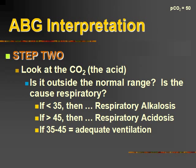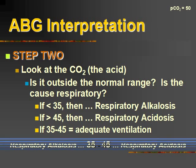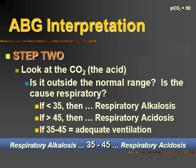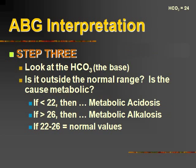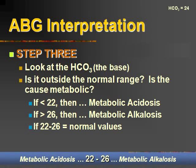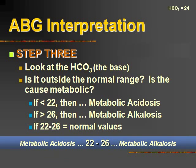Step two, we're going to look at the CO2, the acid. In this case it's 50 — is it outside the normal range? It fits the respiratory acidosis criteria. If it were in the normal range, that would be adequate ventilation. Step three, we're going to look at the bicarb or the base. The base in this case is 24 — is it outside the normal range? Is it less than 22? No. Is it greater than 26? No. So it's within normal range.